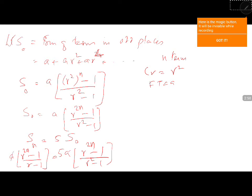Here a cancels, r^(2n) - 1 cancels, so finally r² - 1 = 5(r - 1).